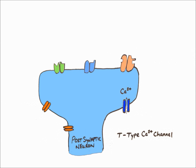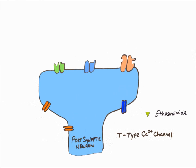In a similar way, open T-type calcium channels allow calcium to enter the post-synaptic neuron, causing depolarization and excitation, which allows epileptic focus action potentials to spread further. However, ethosuximide blocks T-type calcium channels, stopping calcium from entering the post-synaptic neuron and therefore reducing the chances of seizures occurring.